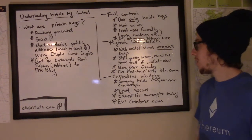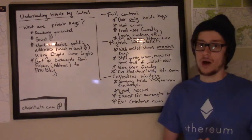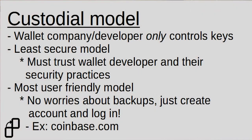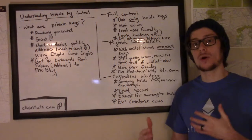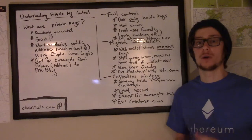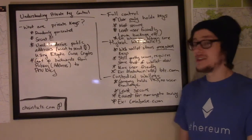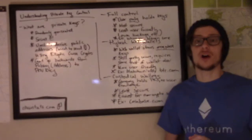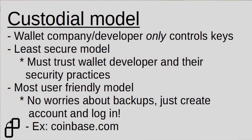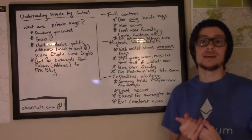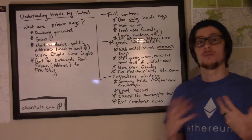The final model is the custodial wallet. These wallets are popular on exchanges like coinbase.com. With this model, the user of the wallet actually has no knowledge of what his or her private keys are — they're entirely stored and known by the company or the developer implementing the wallet. This model, for obvious reasons, is the least secure. It requires complete trust of the company developing the wallet to make sure they not only don't run off with your private keys and therefore your money, but also keep the private keys safe from hackers trying to break into their servers.